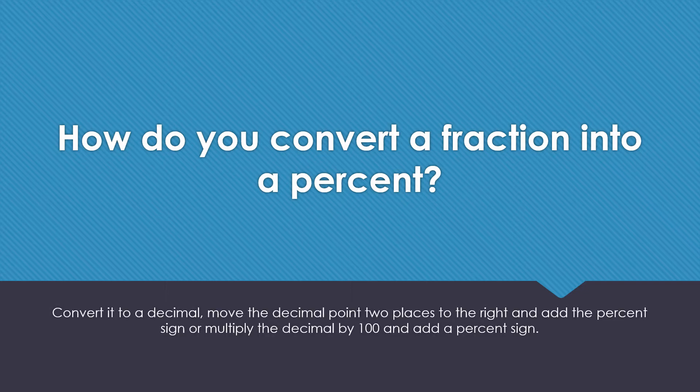You convert it to a decimal by dividing, and then move the decimal point two places to the right and add a percent sign.